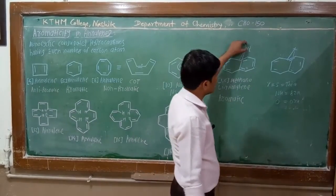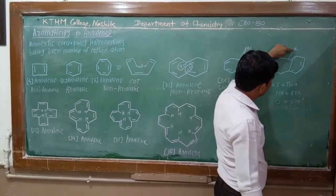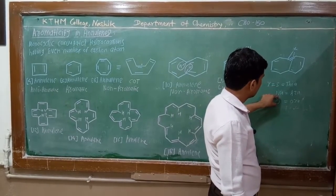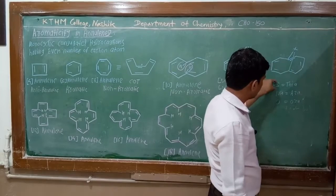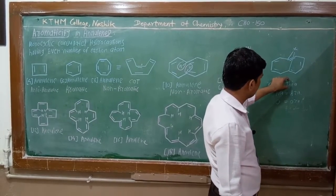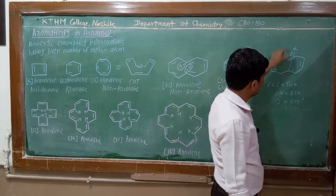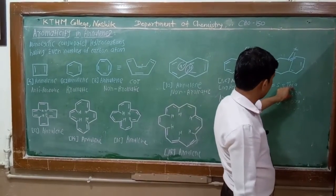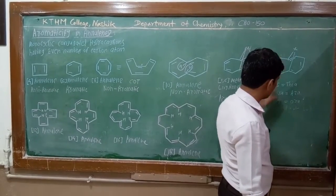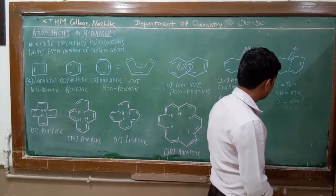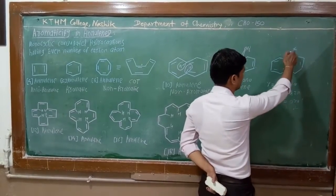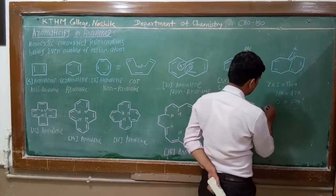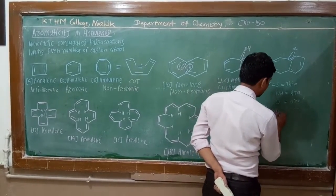Instead of CH2, we can replace X, where X is sulfur, NH, or oxygen. When X equals sulfur, this is known as thia-annulin. When X equals NH, this is aza-annulin. When X equals oxygen, this is oxa-annulin. In all these cases there is no transannular effect, and hence all these compounds are aromatic compounds.